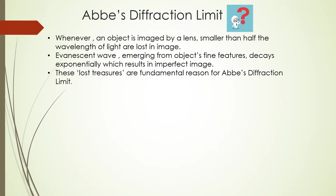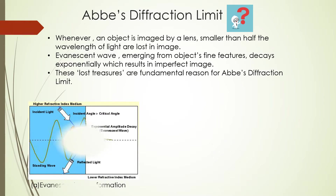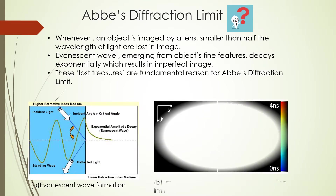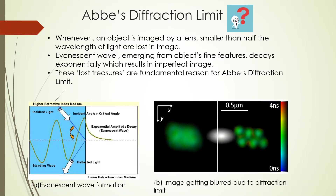This loss of information arises because light emerging from an object's fine features carries evanescent waves that exponentially decay, resulting in an imperfect image. This loss of information is the fundamental reason for Abbe's diffraction limit.